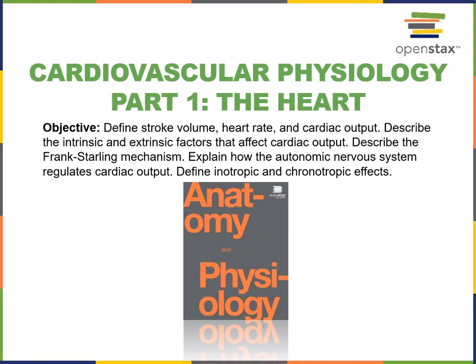In this video, I will define stroke volume, heart rate, and cardiac output. Describe the intrinsic and extrinsic factors that affect cardiac output. Describe the Frank-Starling mechanism. Explain how the autonomic nervous system regulates cardiac output and define inotropic and chronotropic effects.